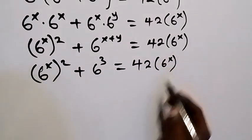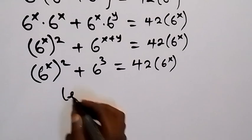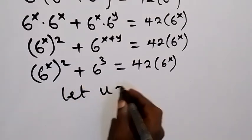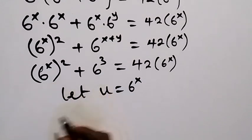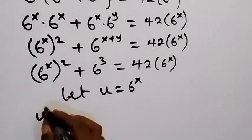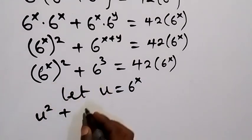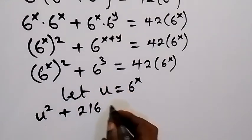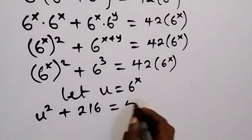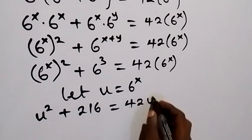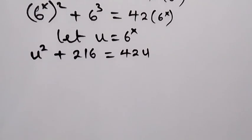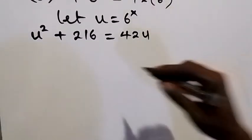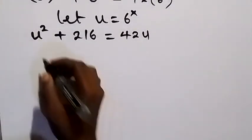Let u equal 6 raised to power x. Then this equation becomes u squared plus 6 raised to power 3 — that's 216 — equals 42u.